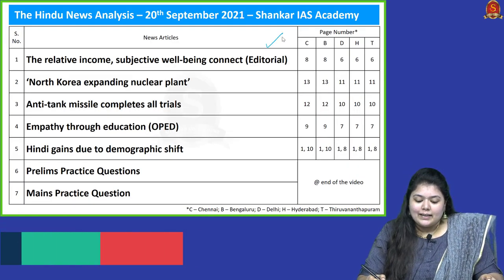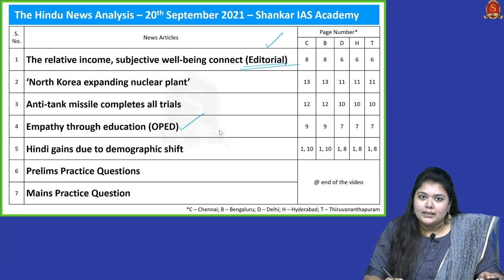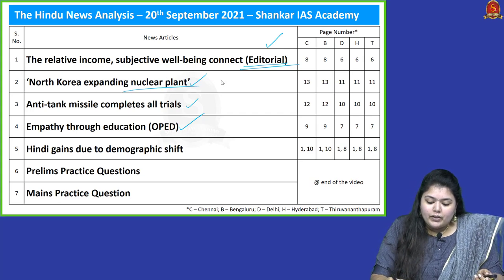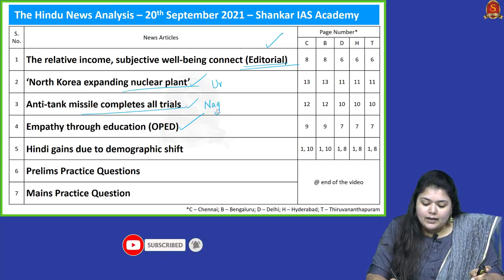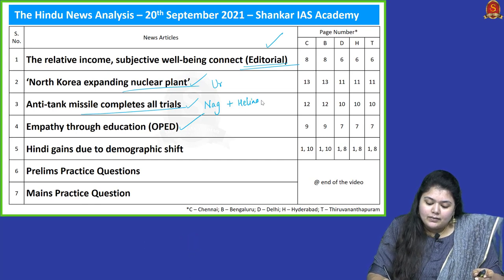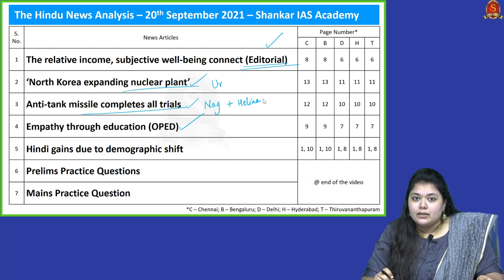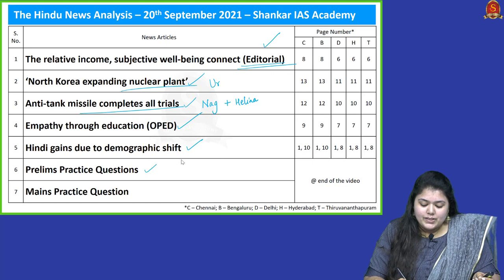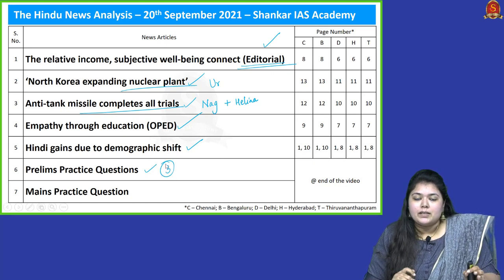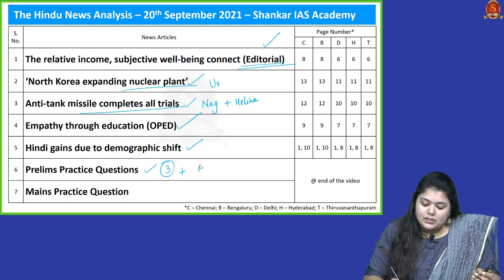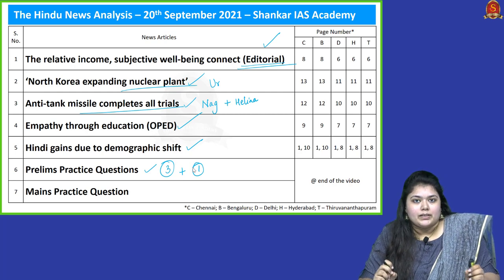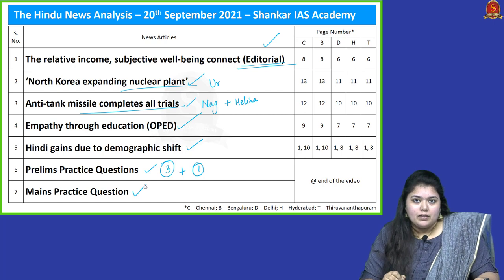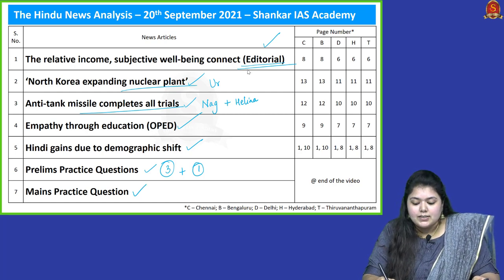These are the news articles chosen for discussion today. We have one editorial and one open article discussion, and two important topics based on science and technology. The first topic covers uranium enrichment, the second covers two important missiles — the Naag missile and the Helena missile. We also discuss facts related to the Hindi language, along with three practice questions discussed elaborately and one special question for aspirants.